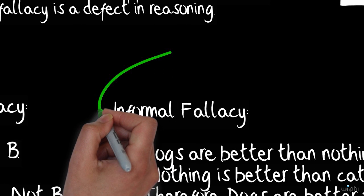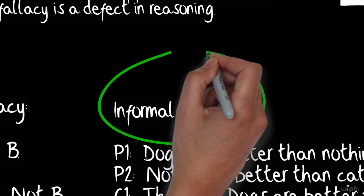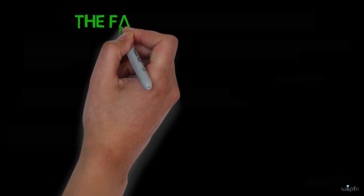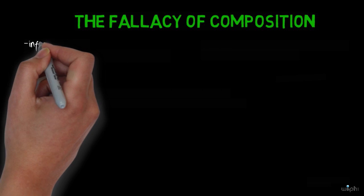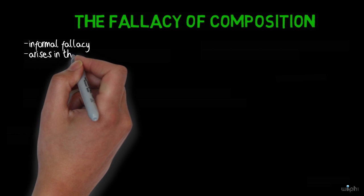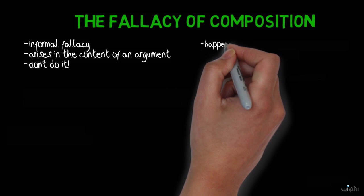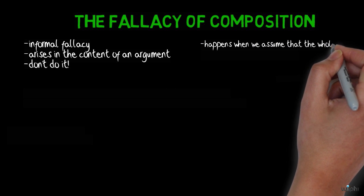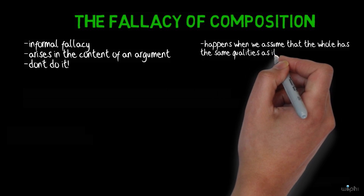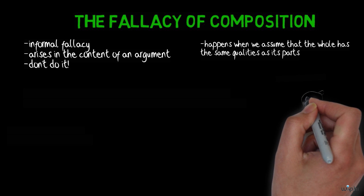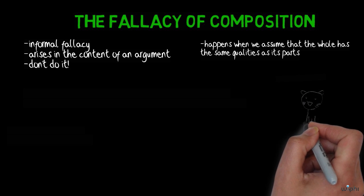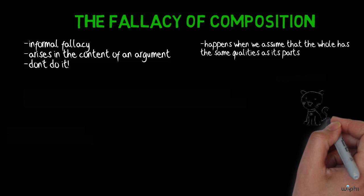For this video, we're going to focus on a particular informal fallacy. So the fallacy of composition is an error in reasoning that arises in the content of an argument. We'll commit this error when we draw conclusions about the whole from truths about its constituent parts without having a justification for doing so. That is, they think, without justification, that what is true of the parts of something must also be true of the whole those parts compose.